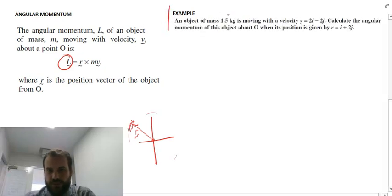So here's our example. Object mass 1.5 kilograms moving with a velocity of 2i minus 2j. Calculate the angular momentum of this object about O when its position is given by this.